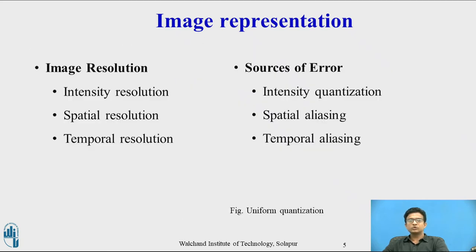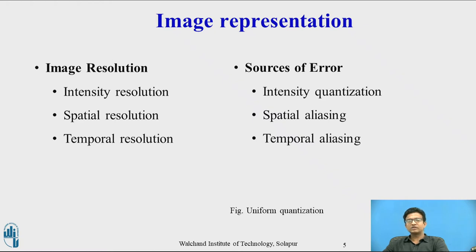In image resolution, we have intensity, spatial, and temporal resolution. Intensity resolution is where each pixel has only a certain depth of bits for color or intensity. Spatial resolution means the image has only width by height pixels. Temporal resolution refers to monitors refreshing the image at only a certain rate in hertz.